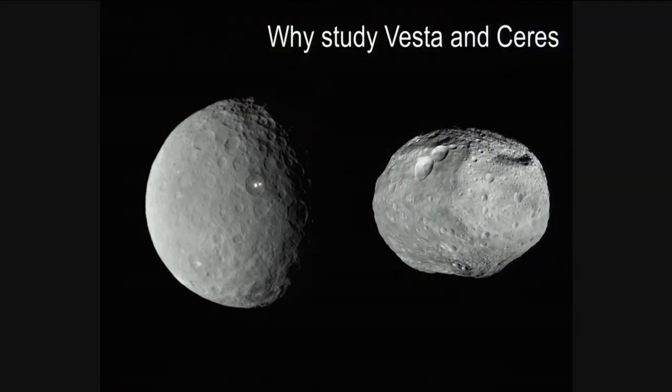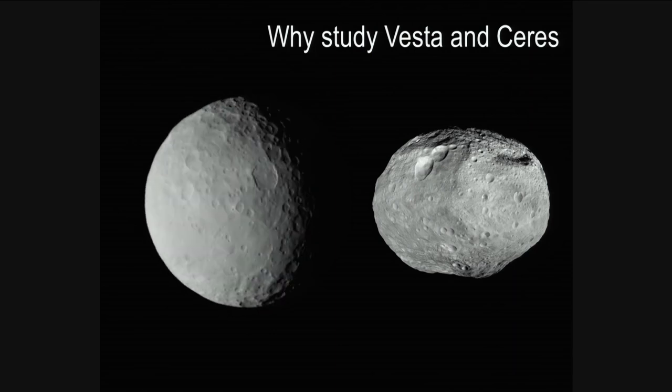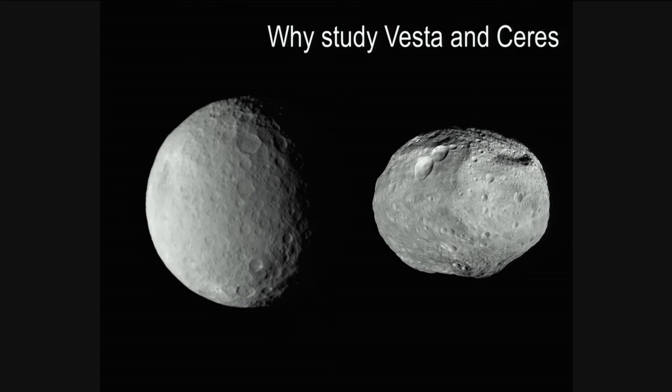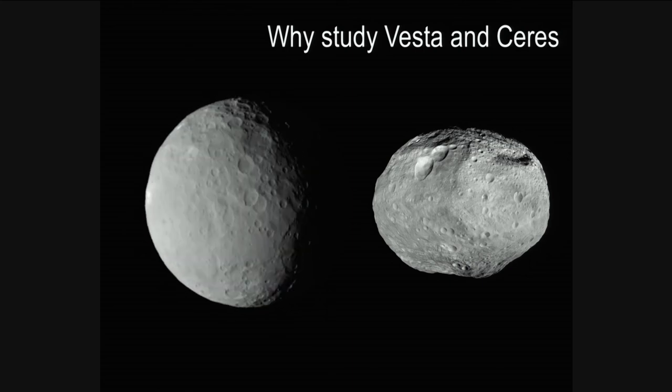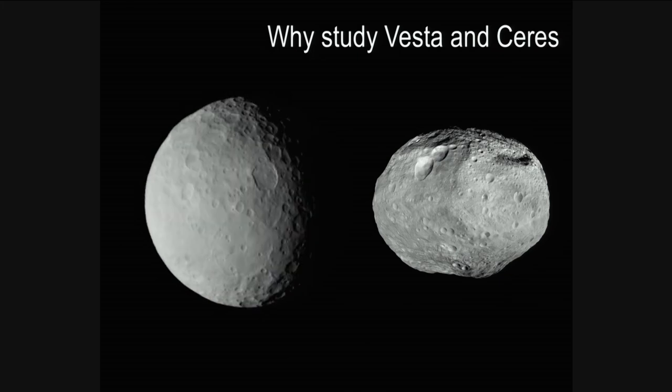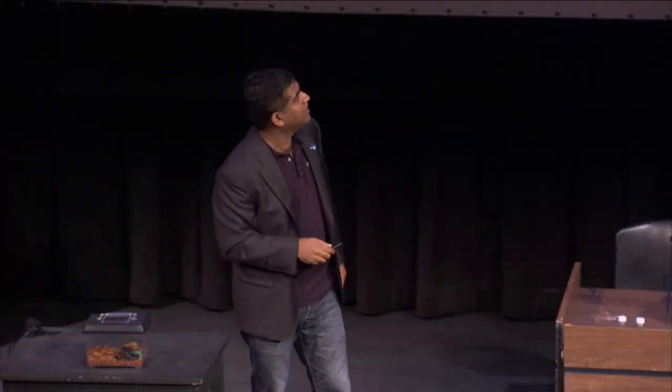We know why we need to study near-Earth asteroids, but why study Vesta and Ceres, which are far out in the main belt and don't come close to Earth? It's more of a scientific nature. Vesta is the smallest object that has an iron core, probably a mantle and a crust, just like the Earth — it differentiated like the terrestrial planets, and it's the only one of its type remaining in the asteroid belt. We have evidence that a hundred similar Vestas once existed but were all destroyed; we don't know why this one survived.